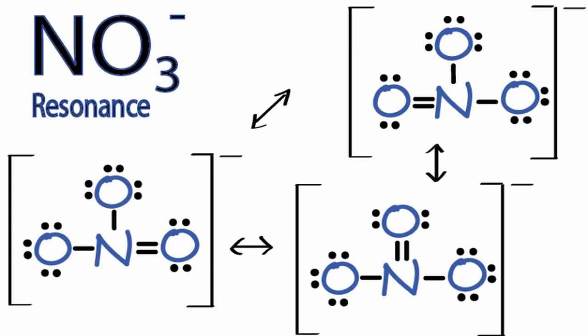In the real world, we don't have three separate structures for NO3-. What we have is an average of these three structures. So if we look at the bonds, each bond would really be one and a third bond. We wouldn't have double bonds and single bonds. And experimental data in the lab shows us that this is the case.